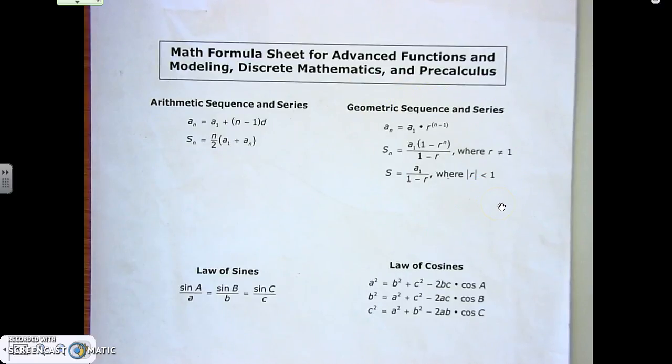Now the only thing is whenever we start dealing with all of it together, arithmetic sequence and series and geometric sequence and series, you have to figure out which formula is the correct one. You have to figure out if it's arithmetic that you're dealing with or if it's geometric that you're dealing with, and then go from there.